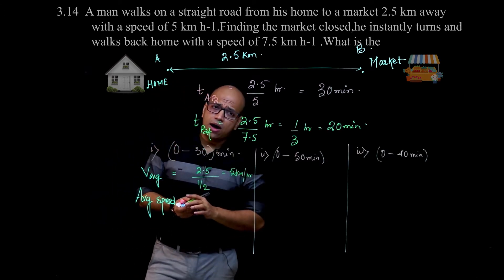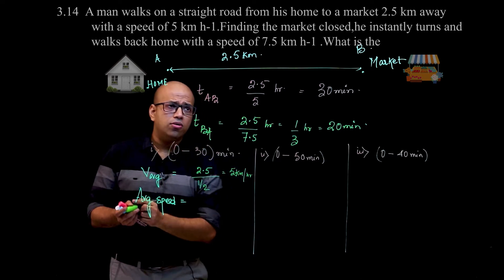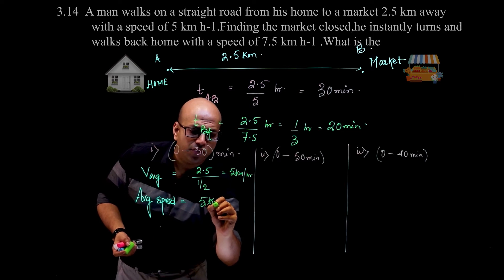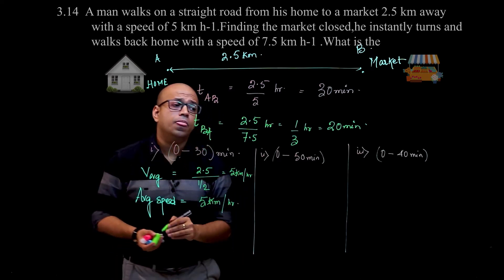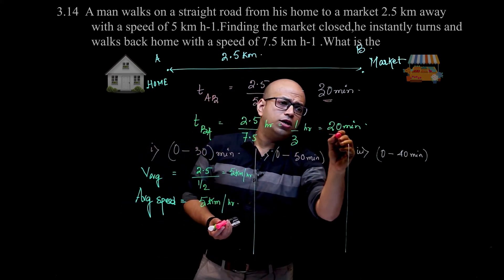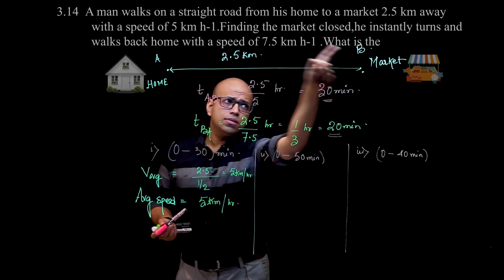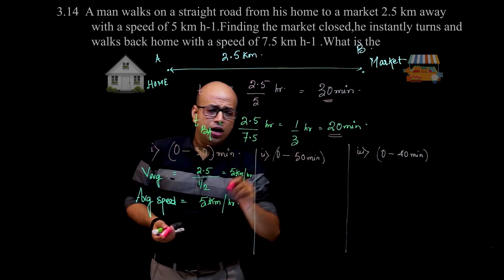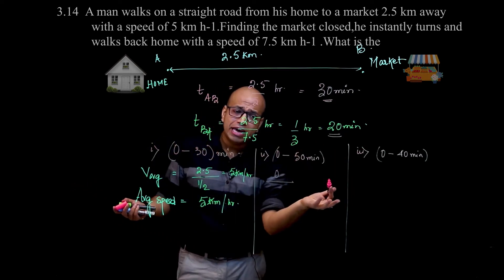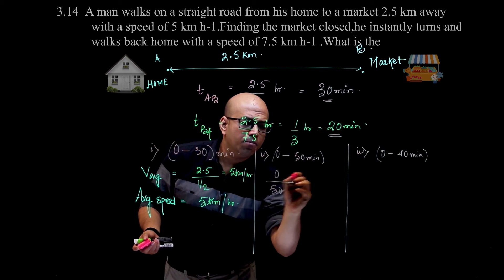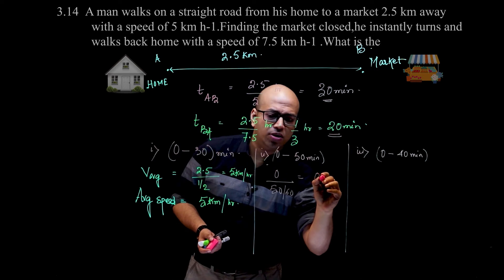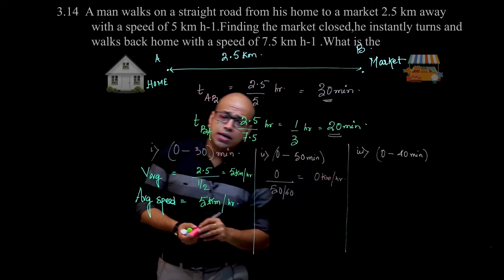Average speed is the same for this case - straight line, 5 kilometers per hour. But for 0 to 50 minutes, 30 minutes went forward and 20 minutes came back. In this case, displacement is 0 because you're back home, and time is 50 minutes. Ultimately, the answer is 0 kilometers per hour.